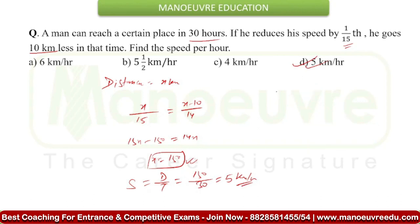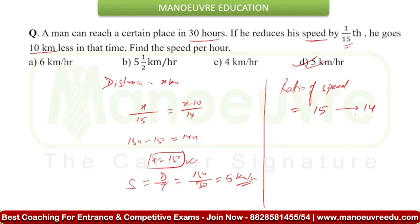We have one more method to solve this type of question. You can apply a shortcut. What does the question give you? The ratio of speed. First, assume that the speed is 15. After that, the speed is reduced by 1/15th, so the new speed becomes 14. So the ratio between the speeds is 15 to 14. If the speed ratio is this, then the time ratio becomes 14 to 15.